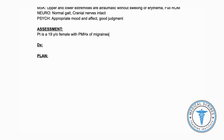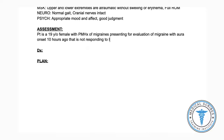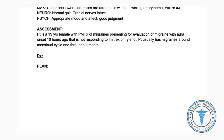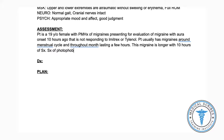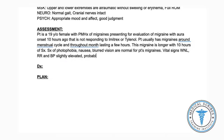We have a 19-year-old female with a past medical history of migraines, presenting for evaluation of a current migraine with aura that began 10 hours ago and is not responsive to her usual medication, Imitrex, or to Tylenol. She usually has migraines around the time of her menstrual cycle and additional times throughout the month, typically lasting a few hours at a time. This migraine is longer than usual at about 10 hours. She has associated symptoms of photophobia, nausea, and blurriness of vision — all of which she reports are normal for her. Vital signs are within normal limits, though respiratory rate and blood pressure are slightly elevated, likely due to pain.